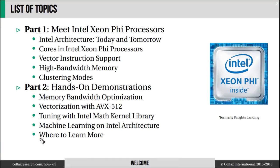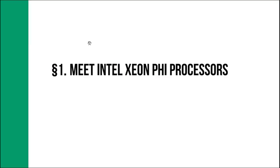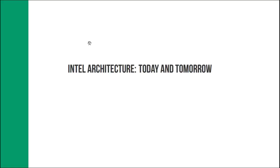Now we are beginning episode 1: Intel architecture. Intel makes a variety of processors and you have probably worked with an Intel Core processor, an Intel Atom, or a Pentium in a desktop or in a mobile computer.